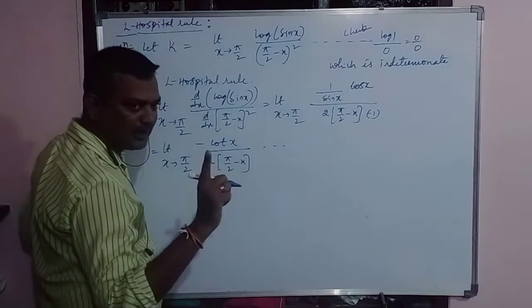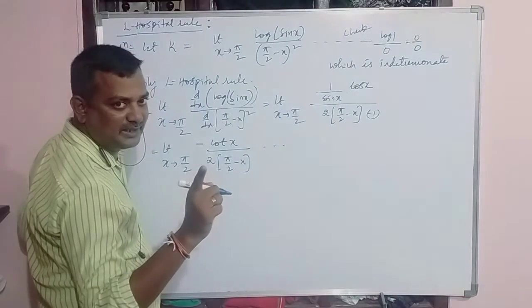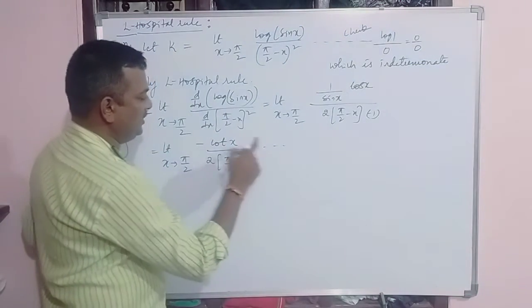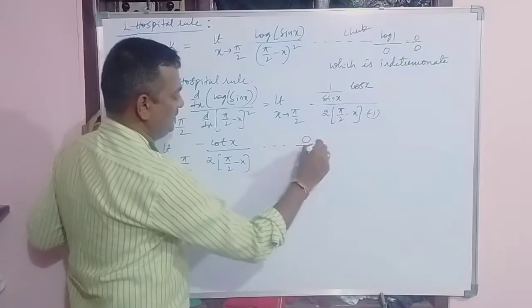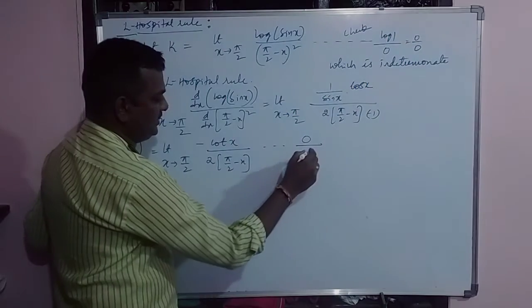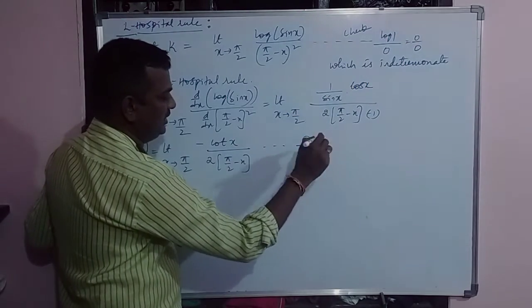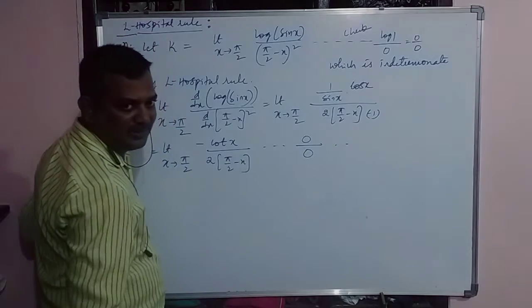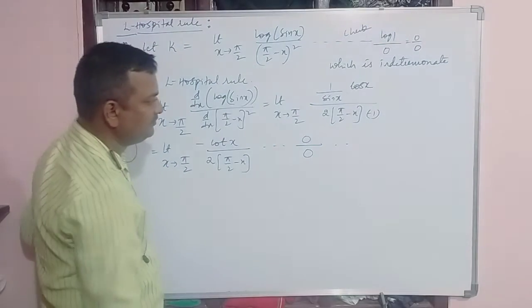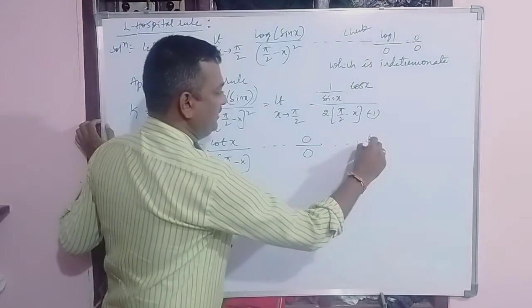What is cot pi by 2? You know tan pi by 2, tan pi by 2 is infinity. So what is cot pi by 2 value? Which is 0 divided by pi by 2 minus pi by 2 is 0. Again, which is indeterminate form.